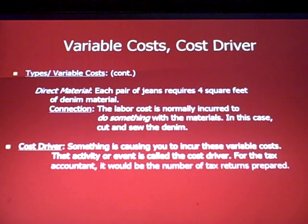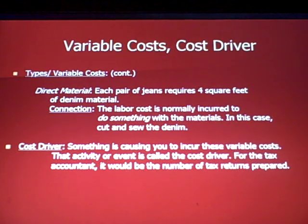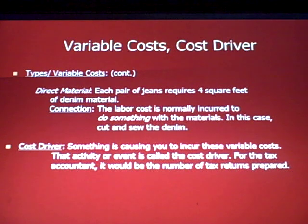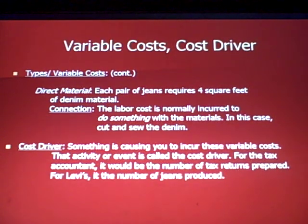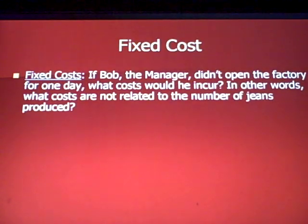Both direct material and direct labor increase and decrease based on a cost driver — something that causes you to incur these variable costs. That activity or event is called a cost driver. For a tax accountant, it would be the number of tax returns prepared. For Levi's, it's the number of jeans produced.